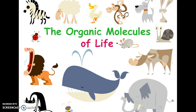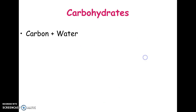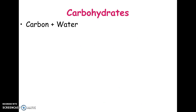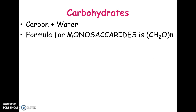We're going to be talking about four different macromolecules. Today we're just going to focus on carbohydrates, which is our first one. Carbohydrate literally translates to 'carbon water,' which makes sense because if you look at the formula of the base unit of every carbohydrate, it's a carbon and water. That's literally the formula for all monosaccharides, which are the building blocks of carbohydrates.